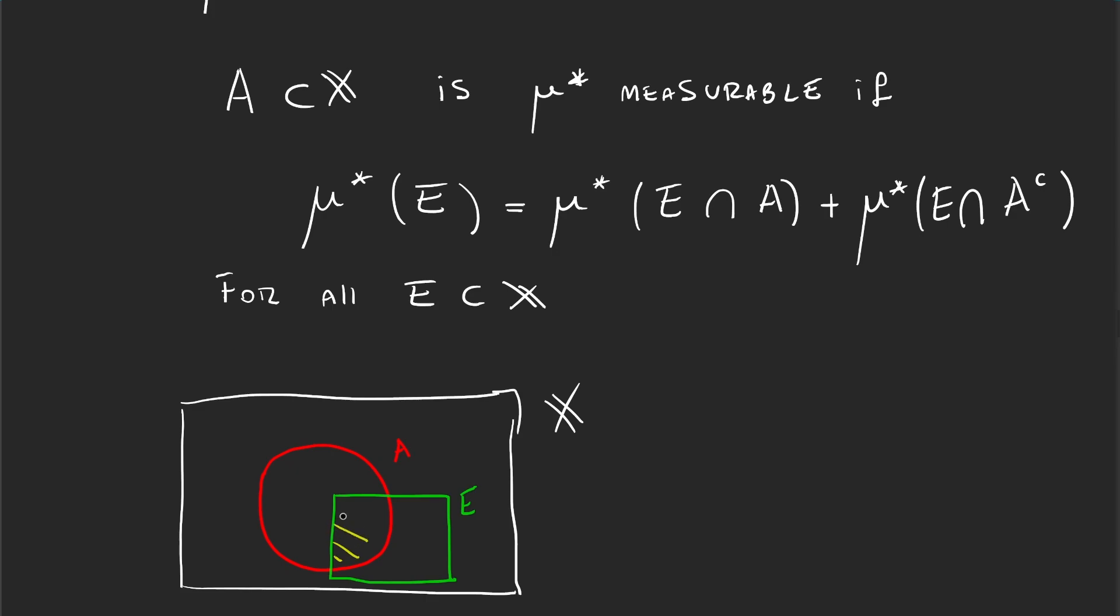that is A ∩ E, so it would be in this first part, plus the measure of this other area here which is E ∩ A^c. Because the complement of A is all this space that's not inside the red circle, so this blue section is E ∩ A^c, and that would be this measure.